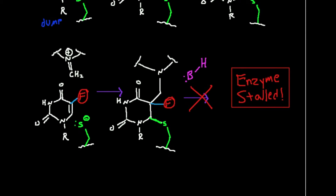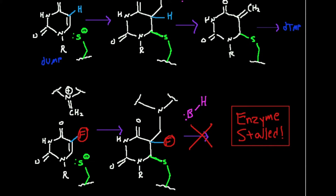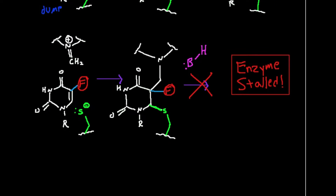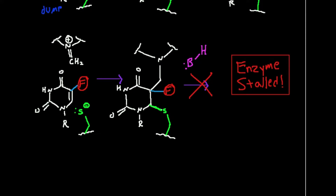Down here is a slightly different molecule. In deoxy-UMP, this atom right here is a hydrogen — that's going to be really important. In the modified molecule, it's a fluoride. They synthesized a molecule that looks exactly like uracil except they replaced that hydrogen with a fluoride. So if you neglect the R group, this part is 5-fluorouracil, making the full molecule deoxy-5-fluoro-UMP — it's still dUMP except with a 5-fluoro group.